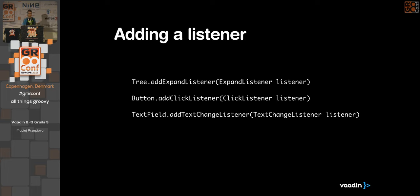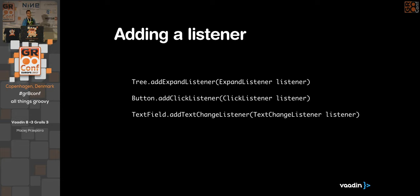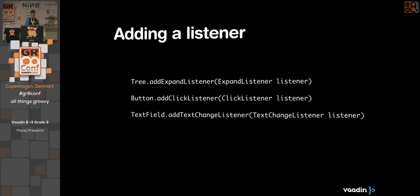There are different kinds of listeners depending on the components. If you have a tree, you can add an expand listener. If you have a text field, you can add not only a value change listener but also a text change listener that fires while the user types — useful for implementing things like a search box.